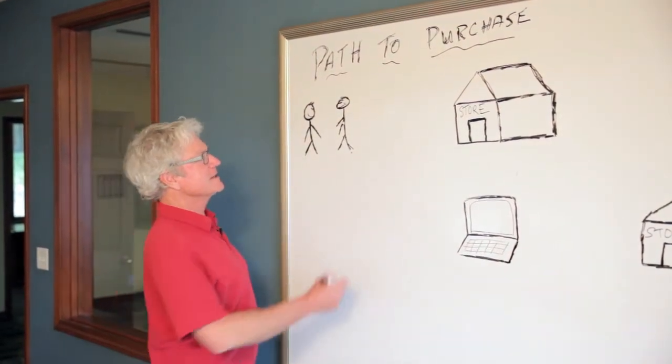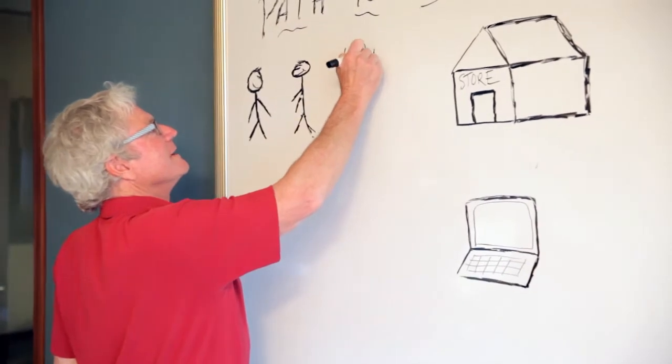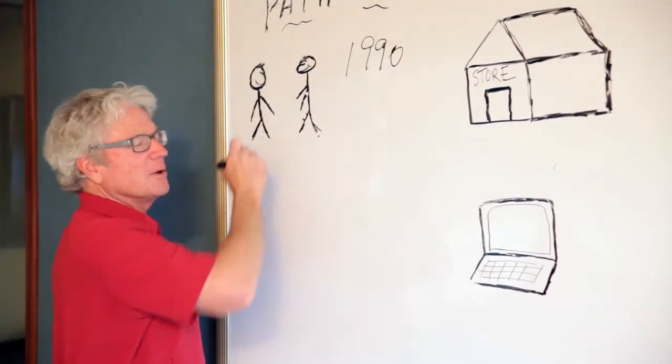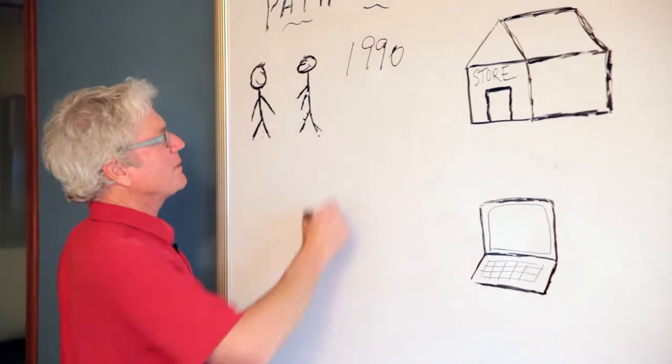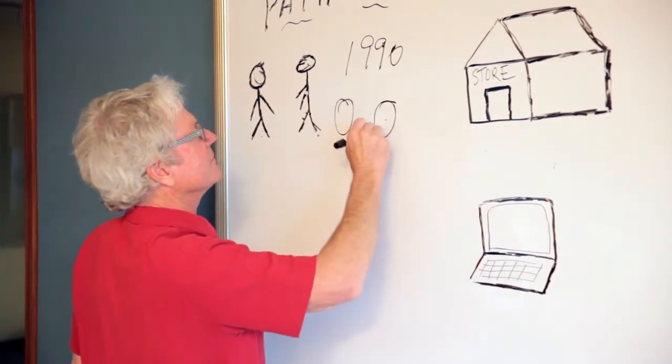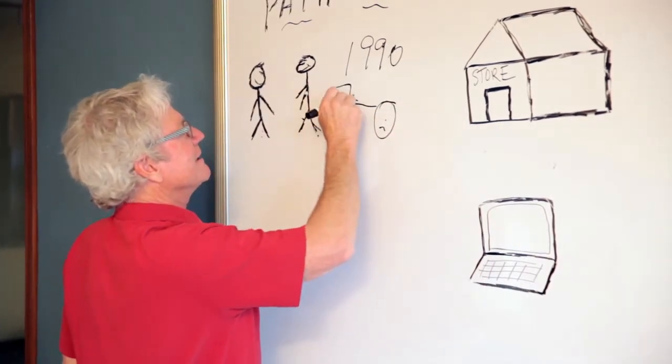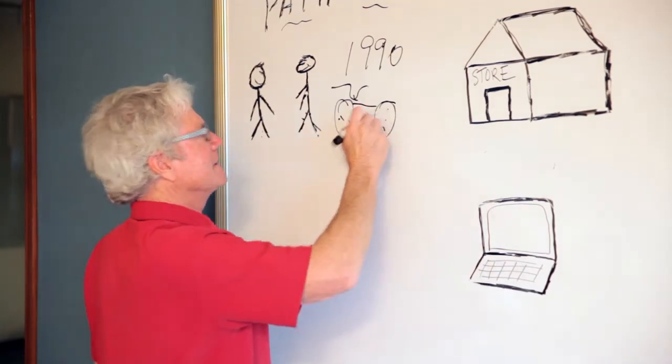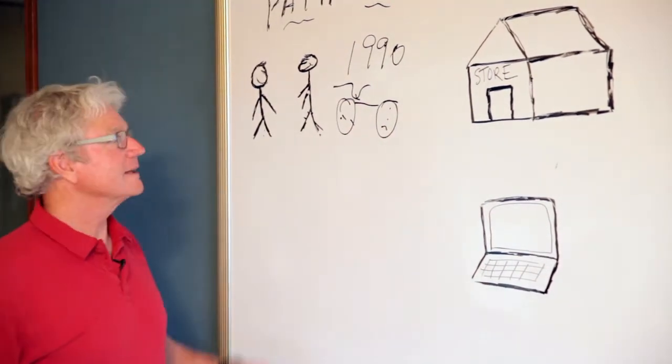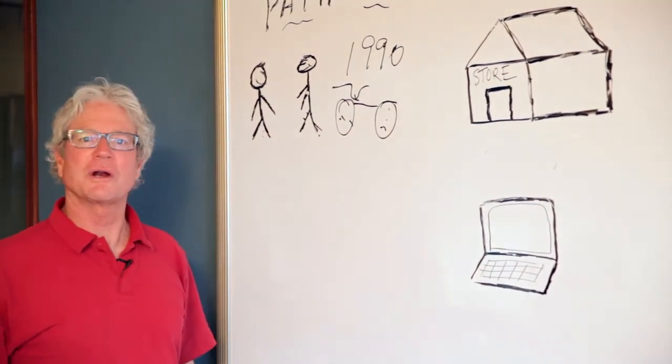So let's say this is 1990 and these two people are talking about a bicycle, a road bike. This guy is telling this guy that it's a great road bike.